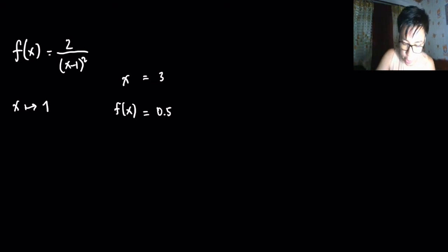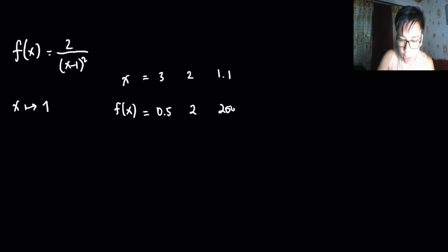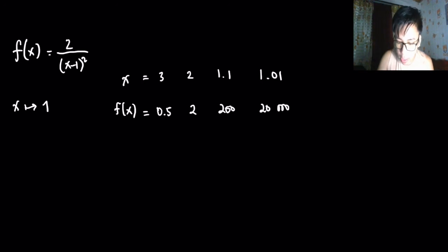When x is 2, your f(x) is 2. When x is 1.1, your f(x) is 200. When x is 1.01, this is equivalent to 20,000. And if x is 1.001, this is actually 2,000,000.